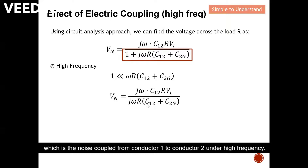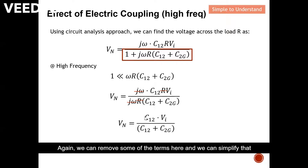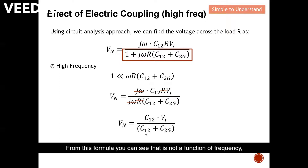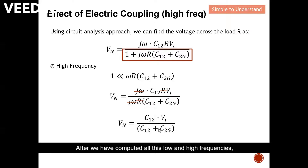Therefore we have this simplified formula for the noise coupled from conductor 1 to conductor 2 under high frequency. We can remove some terms and simplify: the induced voltage from conductor 1 to conductor 2 at high frequency is not a function of frequency — it behaves simply like a DC source.